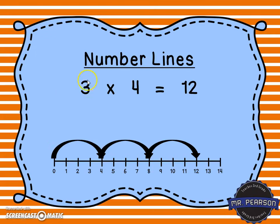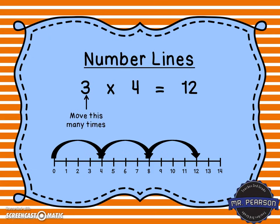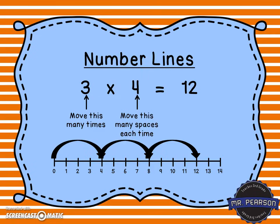On this number line, the multiplication sentence is 3 times 4 equals 12. That tells us we're going to make three jumps — one, two, three — and each time we jump we're going to jump a total of four spaces. The product tells us where we're going to land: move this many times, move this many spaces each time.